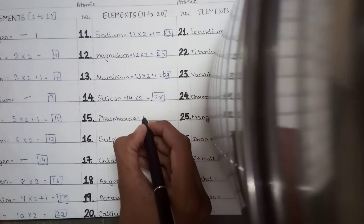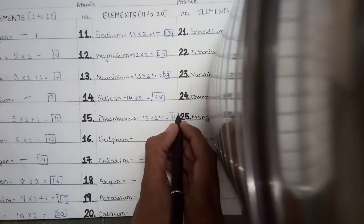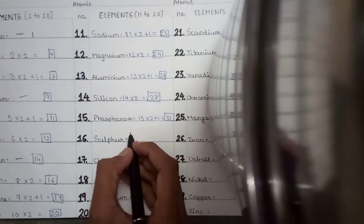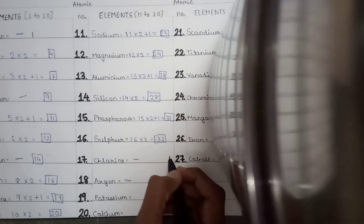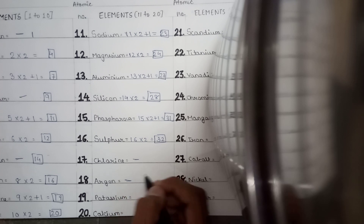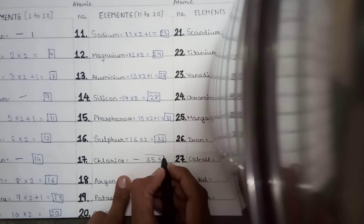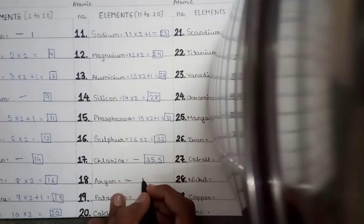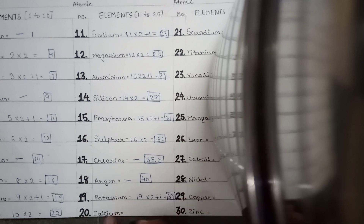For phosphorus, 15 into 2 plus 1 equals 31. For sulfur, 16 into 2 gives atomic mass 32. The trick does not apply for chlorine and argon — chlorine's atomic mass is 35.5, and argon is 40; you have to learn these by heart. For potassium, 19 into 2 plus 1: 38 plus 1 equals 39. For calcium, 20 into 2 equals 40.